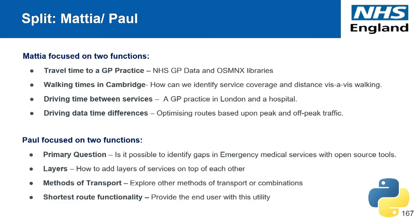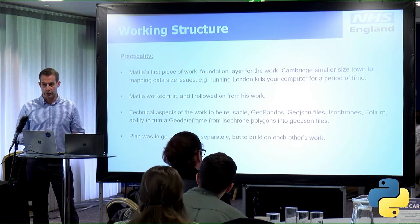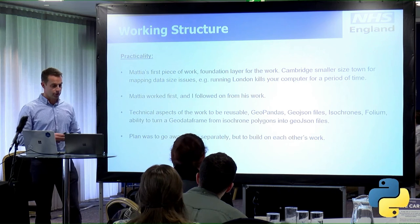Could I identify possible gaps in services using the travel time code that Matea had deployed? Could I then combine modes of transport — so potentially walking and public transport for an end user — and see where their shortest route to a GP practice might be? Practically, this piece did prove to have a few problems. How do you stop your computer crashing when you're running OSMnx nodes and edges on a very dense area like London with all its GP practices? So for a proof of concept we decided to use Cambridge, a smaller town, for mapping and data size reasons.